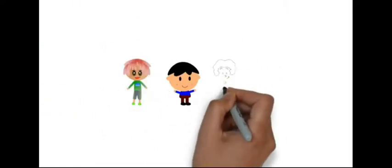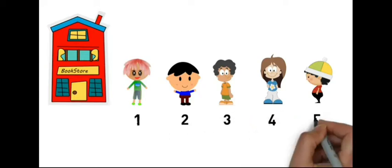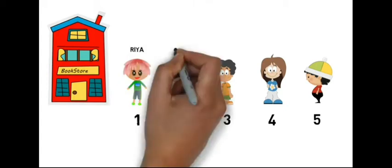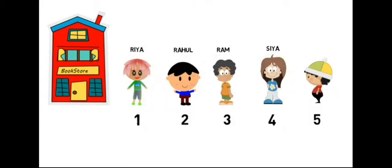So students, here I have drawn some students standing in a queue, and they all want to purchase books from this bookstore. They are standing on numbers 1, 2, 3, 4 and 5. Their names are Ria, Rahul, Ram, Sia, and Kabir.